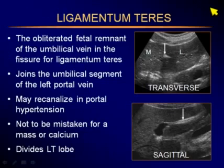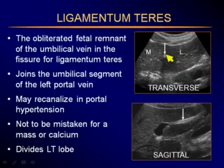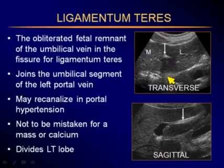Ligamentum teres means round ligament. This is the round ligament in the liver — the obliterated fetal remnant of the umbilical vein. Once the fetus is born, the vein clamps down and becomes a thick fibrous cord located within the fissure for ligamentum teres. The fissure has a little fat in it, giving us bright reflectivity. The collapsed obliterated ligamentum teres is surrounded by echogenic fat. On a transverse section of the left lobe, it becomes a divider of the left lobe into medial and lateral segments.